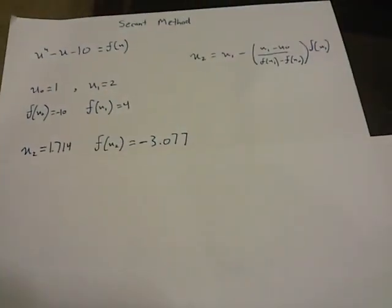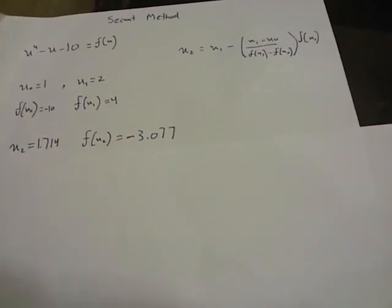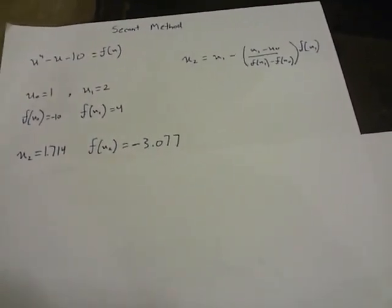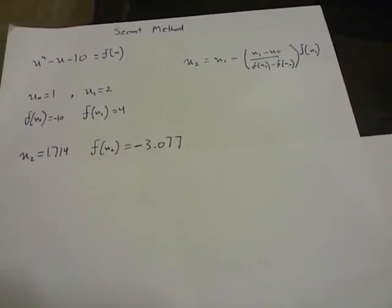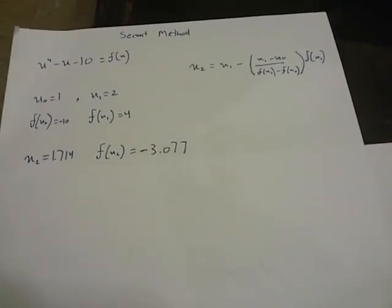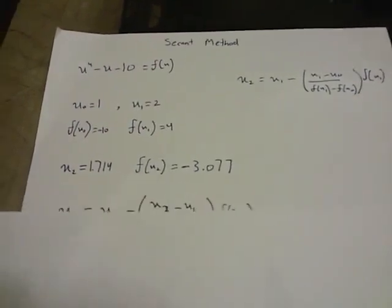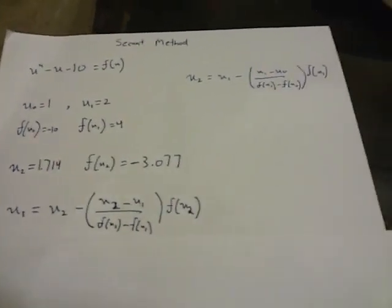Now remember that we're supposed to stop when our function f of x2 gets to 0.0. So this was our first iteration. Let's move forward - x3 is going to be our second iteration.